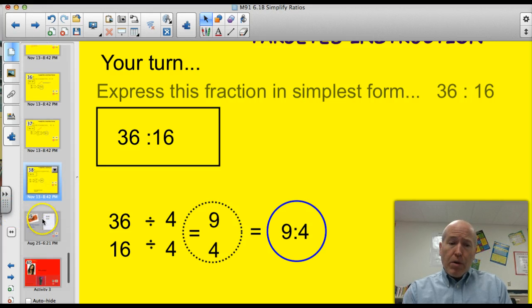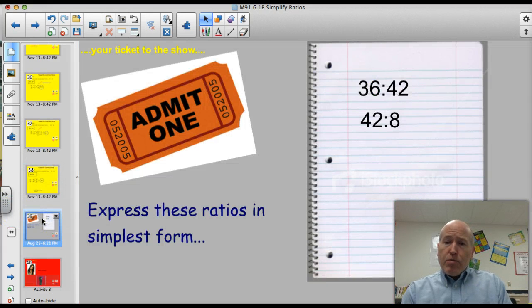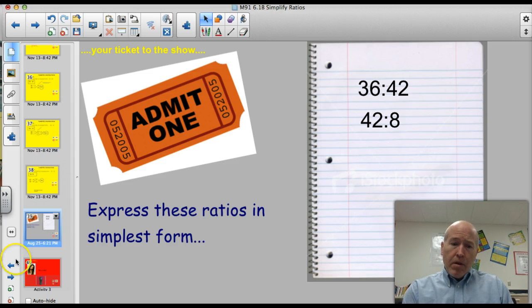I think you're ready for the ticket to the show. It's a pretty straightforward target. Express these ratios in simplest form. 36 to 42. And 42 to 8. I'll give you a second to write those down.